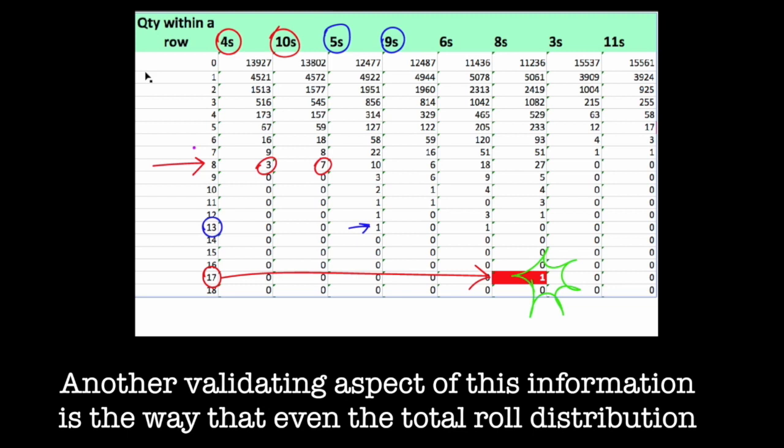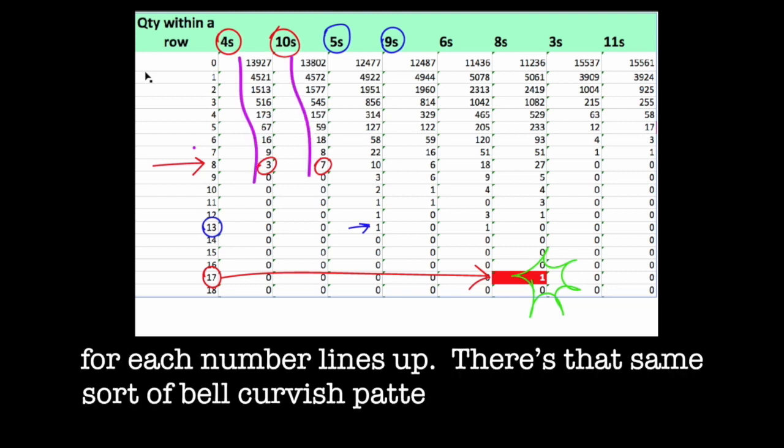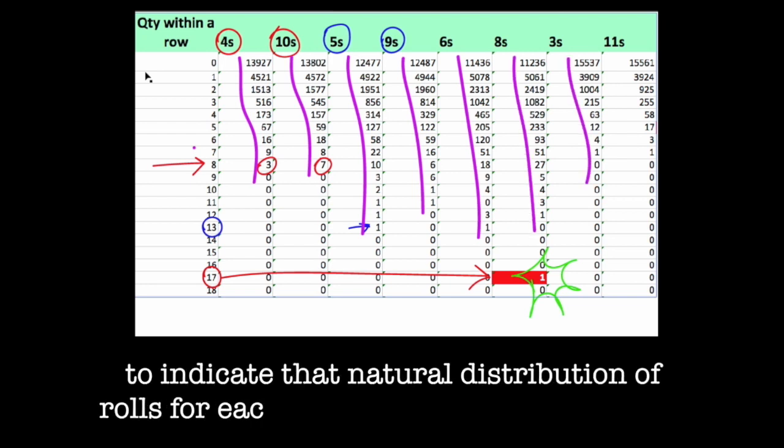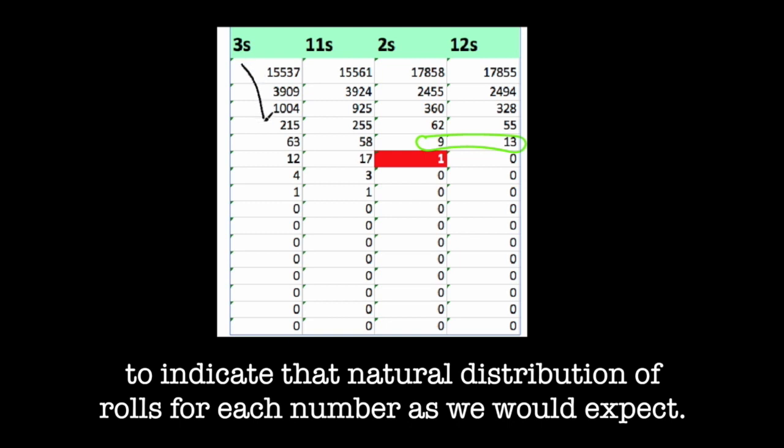Another validating aspect of this information is the way that even the total roll distribution for each number lines up. There is that same sort of bell-curvish pattern going all the way through to indicate that natural distribution of rolls for each number as we would expect.